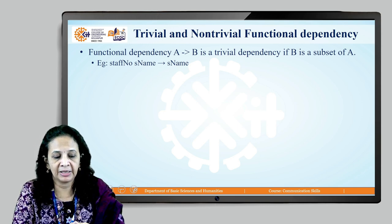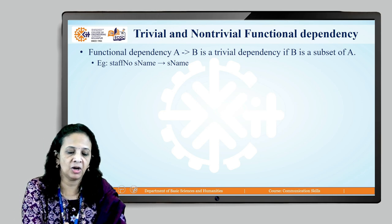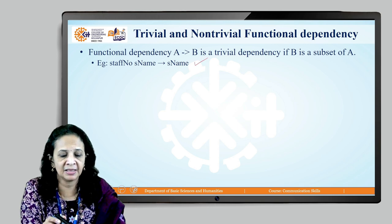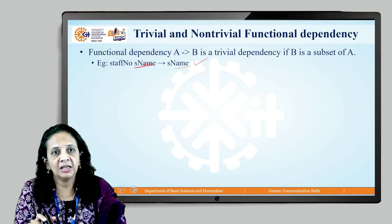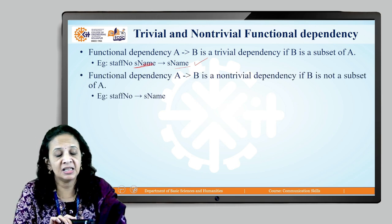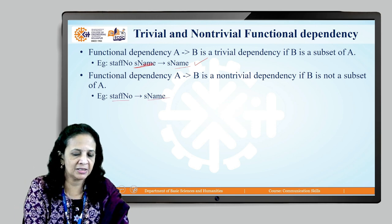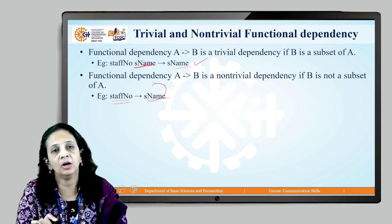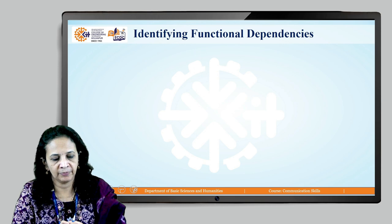There are also trivial and non-trivial functional dependencies. A → B is trivial if B is a subset of A — for example, staff number → staff name where staff name is a subset of the determinant. Non-trivial means B is not a subset of A.